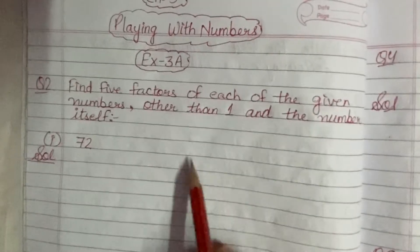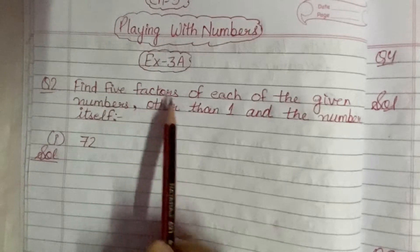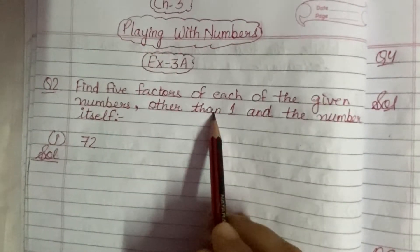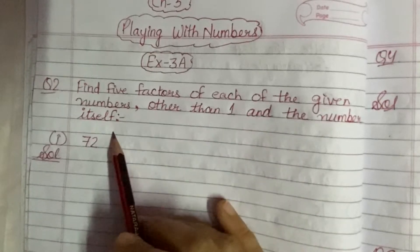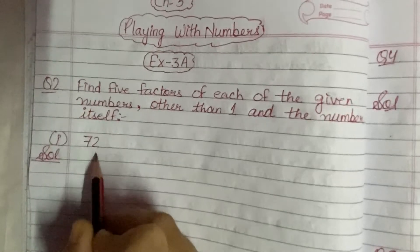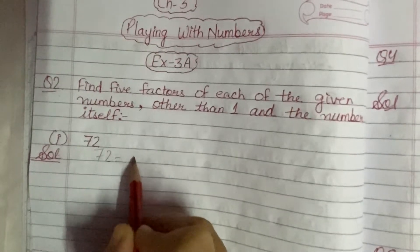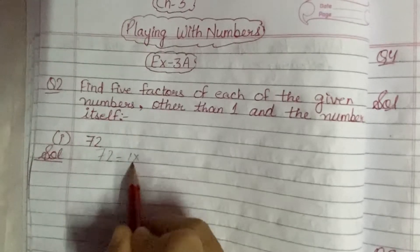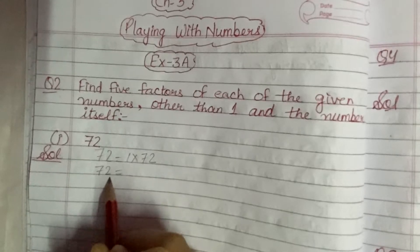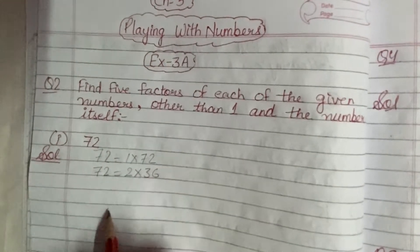Now students, firstly I have taken question number 2. The question says: find 5 factors of each of the given numbers other than 1 and the number itself. The first part is 72. Now 72 can be written as 1×72, 2×36.